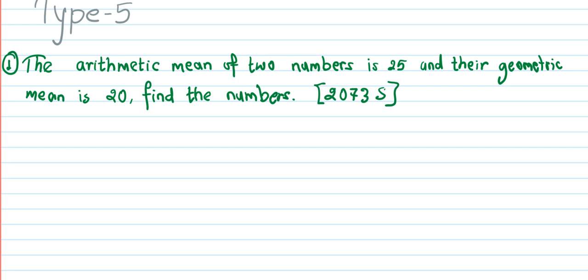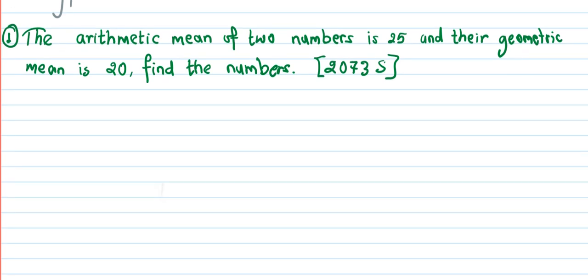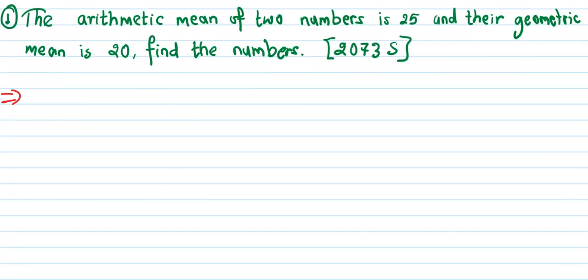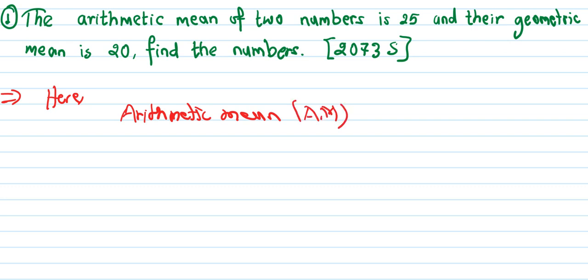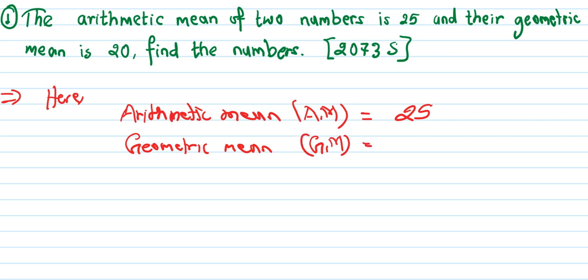This time we will easily solve the question step by step. Let the arithmetic mean be AM. We have arithmetic mean AM. Now let the two numbers be A and B — let A and B be two numbers.